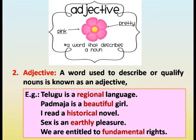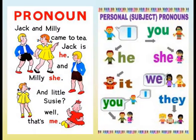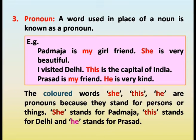Adjective. A word used to describe or qualify nouns is known as an adjective. Examples: Telugu is a regional language. Padmaja is a beautiful girl. I read a historical novel. Sex is an earthly pleasure. We are entitled to fundamental rights. The colored words are examples of adjectives.